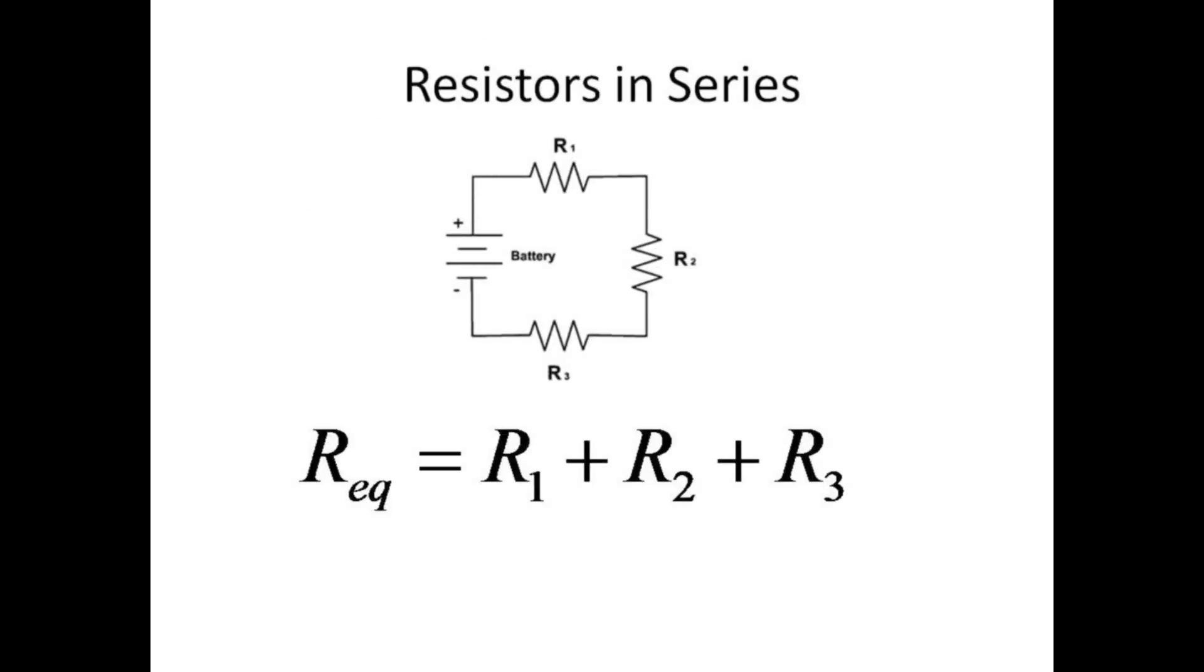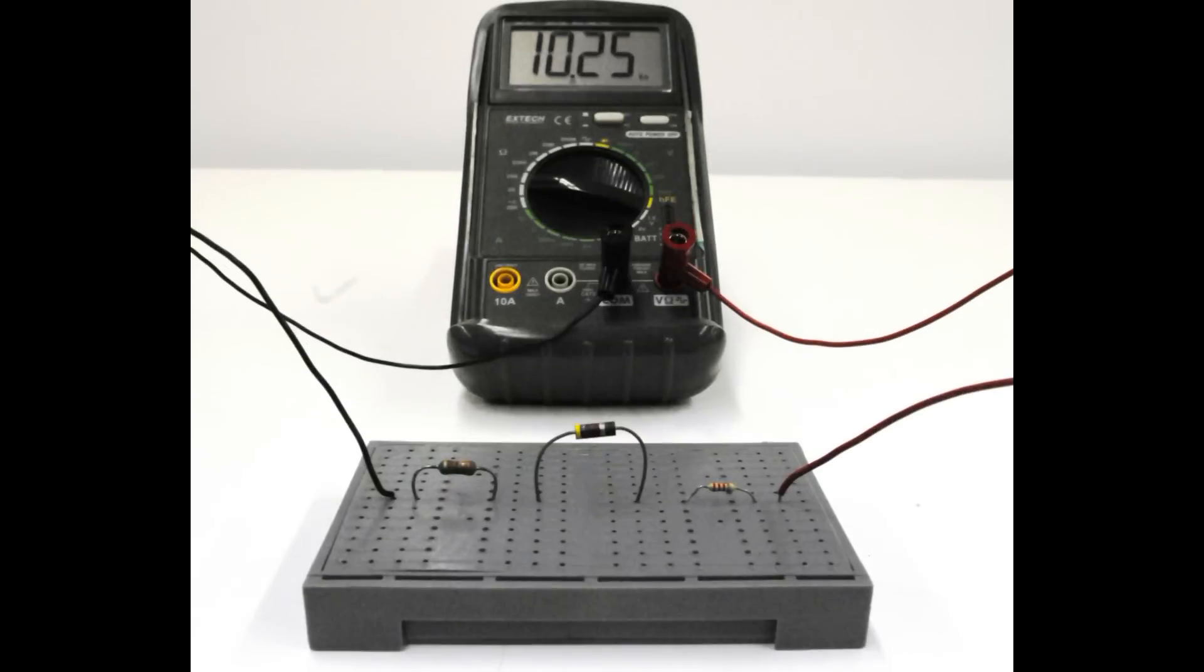When resistors are placed in series, the equivalent resistance is simply the sum of the individual resistances. In the actual circuit, we will place the series resistors in a daisy chain line with each resistor bridging a gap in the circuit board.